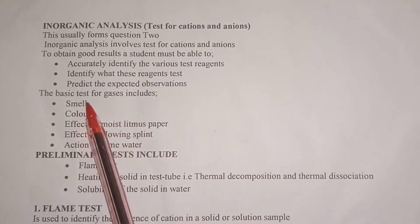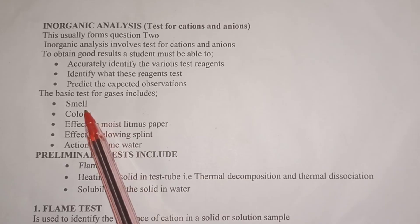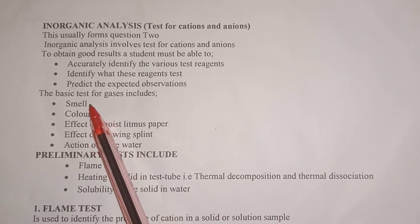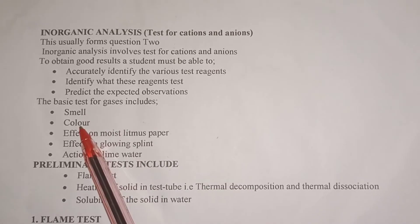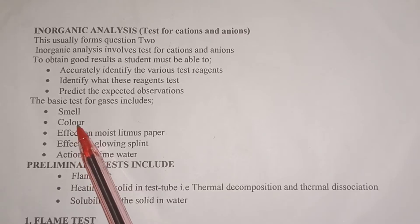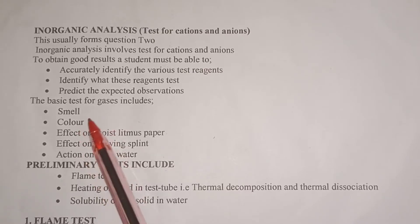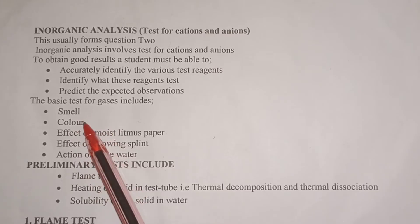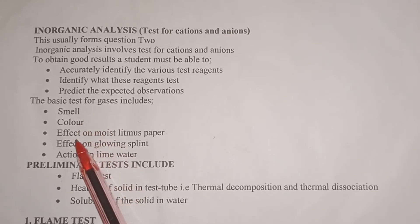The basic tests for gases include: smell of the gas — there are gases that have a pungent, choking smell. You must be able to identify the color of the gas. Some gases are colorless; others have a green or yellow color, like chlorine gas. Another one is brown, like nitrogen dioxide.